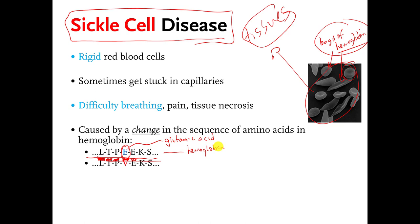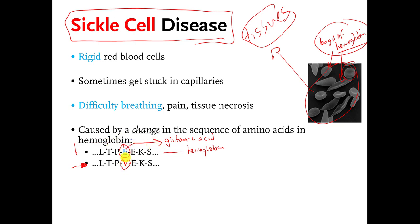The people who have sickle cell disease — in the most common version — make almost the same kind of hemoglobin protein molecule, except instead of this E, which stands for glutamic acid, their bodies put another amino acid in called valine. Now at this point I'd like you to pause the video and look at your book and figure out whether glutamic acid and valine are hydrophobic or hydrophilic, and then you can unpause the video and we will talk.